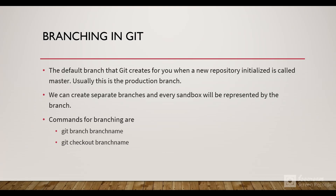What is branching in Git? Whenever we initialize a repository in Git, the default branch that Git creates is called the master branch. Usually we represent this master branch as the production branch. We can create separate branches for every sandbox. Within a sprint, for new development, we'll create a new feature branch. After all the development is done, we commit our changes and then merge that branch to the sandbox or production branch.